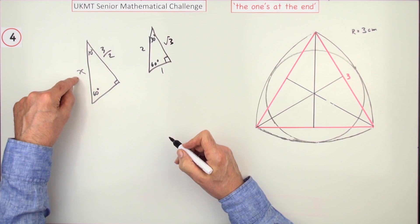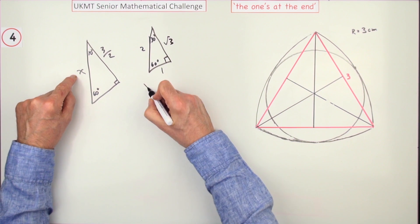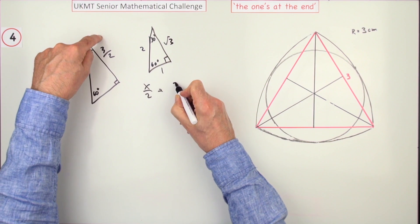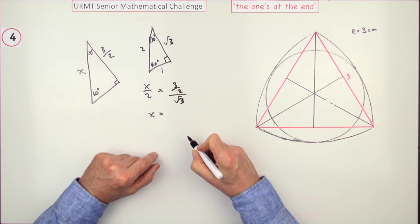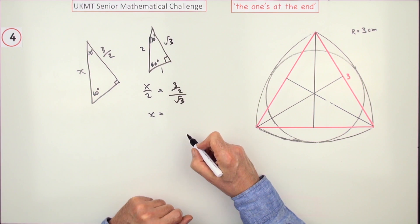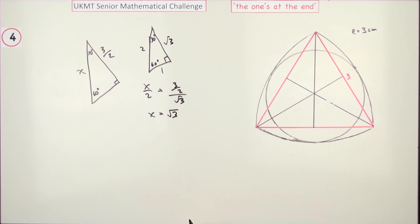Immediately I can get x by comparing it to the simplest 30-60 triangle. x over 2 would be 3 upon 2 over √3, which means x equals - the two will come across and cancel the two, and 3 divided by √3 gives you √3. So x is √3. That didn't take a lot of effort.